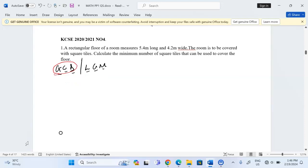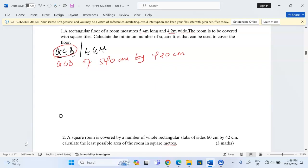Therefore, now that the dimensions have been recorded in meters, 5.4 and 4.2 meters, we can change the dimensions to units which will cancel the decimals in this case. So we can get the GCD of 540 centimeters by 420 centimeters. That's the dimension of the room.